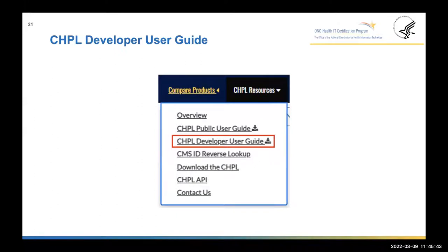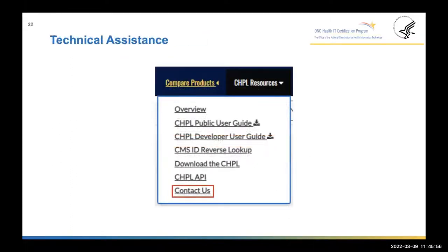We have an additional resource for logged-in users only: the developer user guide. All of the information shared today is available in that developer user guide. To access it, log into your account, click the CHPL resources link in the top right navigation bar, and select the CHPL Developer User Guide. If you run into any technical issues accessing CHPL as a developer, or have questions not addressed today related to CHPL, you may contact us via the portal. Select CHPL resources at the top right, then 'Contact Us' in the drop-down, which directs you to ONC's Health IT Feedback and Inquiry Portal — also called JIRA. When creating a ticket, please select CHPL as the category.